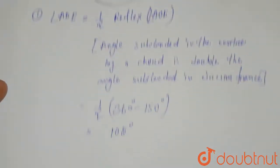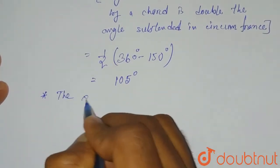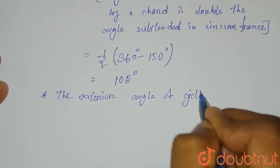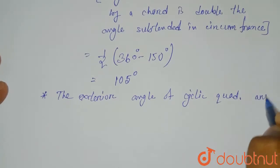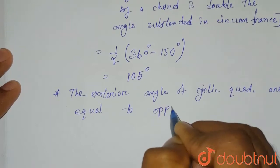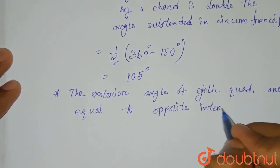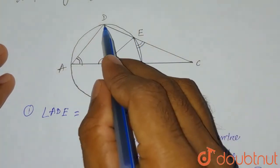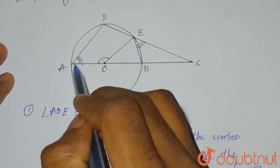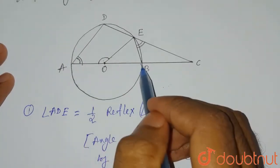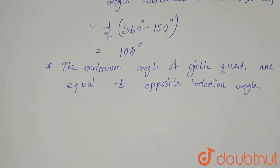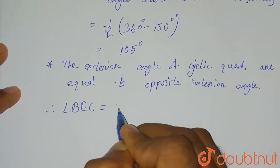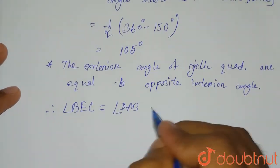We have found that angle ADE is 105 degrees. Now we apply the property that the exterior angle of a cyclic quadrilateral equals the opposite interior angle. Angle BEC is the exterior angle of cyclic quadrilateral ABED, so it equals angle DAB. Since angle DAO equals angle DAB and is given as 51 degrees, angle BEC equals 51 degrees.